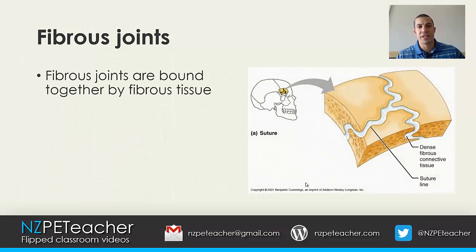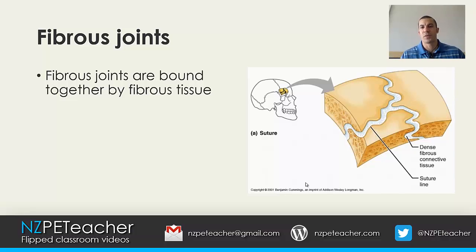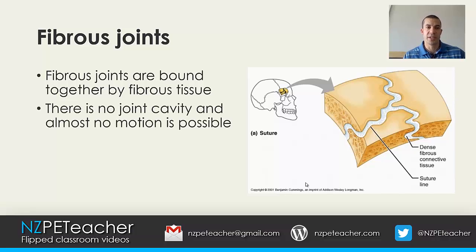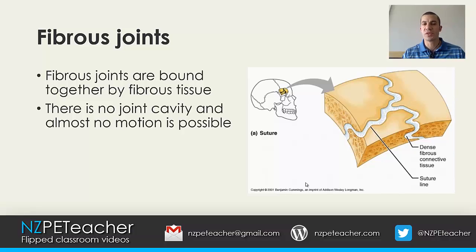Fibrous joints are bound together by fibrous tissue. Looking at the image on the right, we have a suture joint in the cranium, and if you look closely you can see the light blue fibrous connective tissue which binds those bones to one another. There is no joint cavity in this joint and there's very little motion available at that joint.